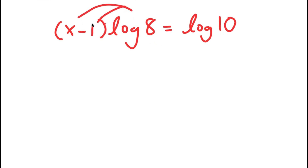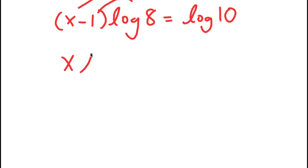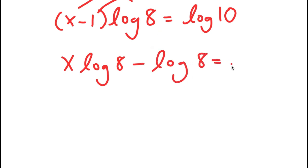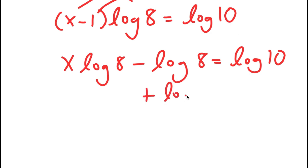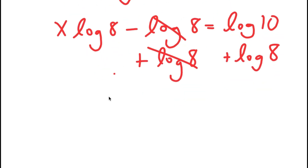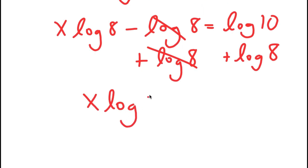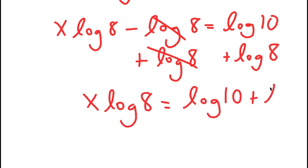Now I distribute log 8, so I get x times log 8 minus 1 times log 8, which is just log 8, equals log 10. Now I add log 8 to both sides — these two cancel out — and I get x times log 8 is equal to log 10 plus log 8.